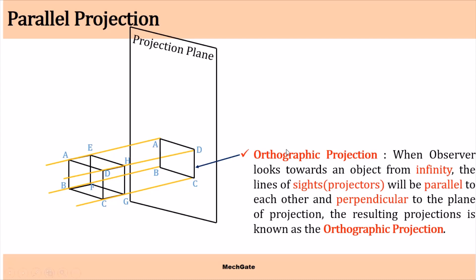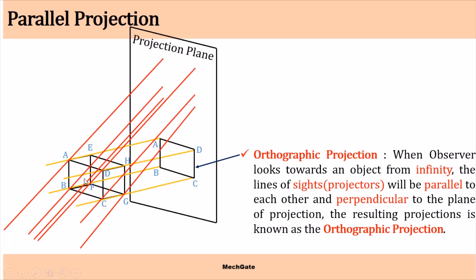When the observer looks towards an object from infinity, the lines of sight or projectors will be parallel to each other and perpendicular to the plane of projection — the resulting projection is known as orthographic projection. Now if the observer is observing the object from another direction where the projector line is not making 90 degrees with the projection plane but is inclined to it, this is known as oblique parallel projection.